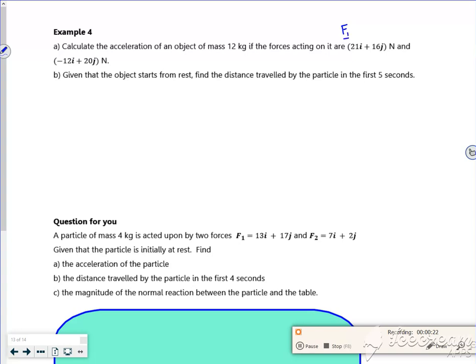So I've got two forces here, force 1 and force 2. Let's find the resultant force first. That's going to be adding them together. So what have I got? 21 and 16 minus 12 and 20. So my resultant force will be 9 and 36.